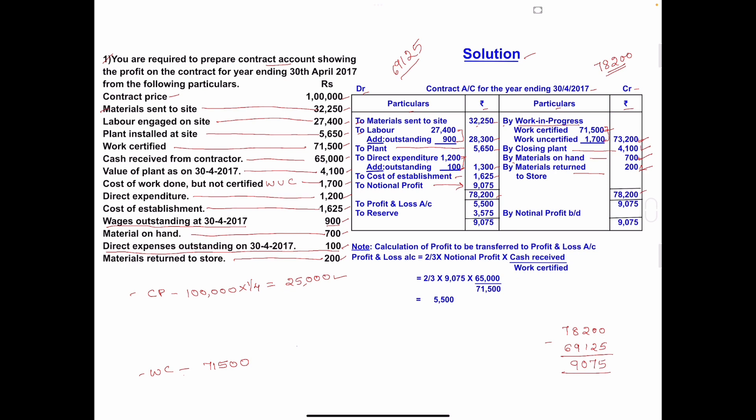The second condition: if work certified is more than one-fourth but less than half of contract price, one-third of notional profit is transferred to profit and loss account. Half of 1 lakh is 50,000. Work certified is 71,500, which is more than 50,000, so the second condition also does not apply.